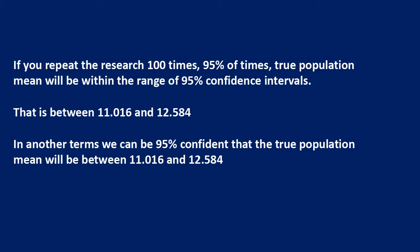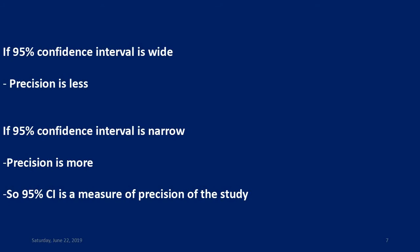In other terms, we can be 95% confident that the true population mean will be between 11.016 and 12.584. If the 95% confidence interval is wide, then precision is less — meaning the precision of predicting the true population value based on the sample value is less. If the 95% confidence interval is narrow, precision is more, meaning precision of predicting the true population value from the sample value is more. So the 95% confidence interval is a measure of precision of a study.